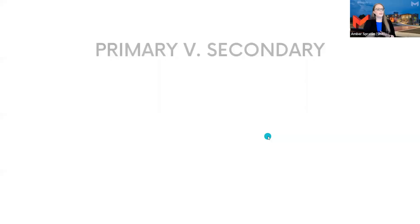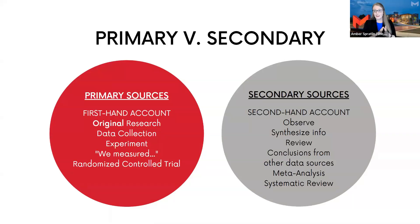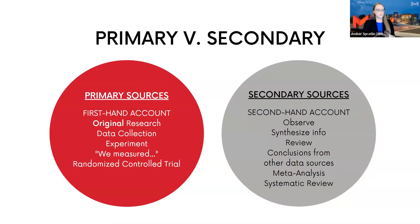A primary source is a first-hand account — it is written by the person who did the research. There is original research involved, meaning there may have been an experiment or a survey. You will see data collection in that article; there might be a results section where they report, for example, that 60 people said this and 70 people said that, or that a medication was tried on an experiment group and a certain number improved. There will be original research and data collection.